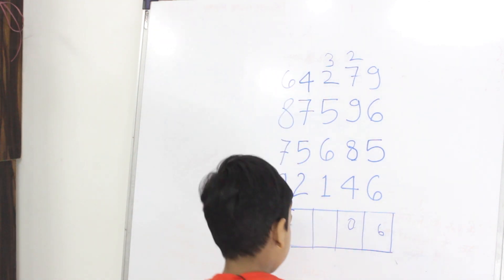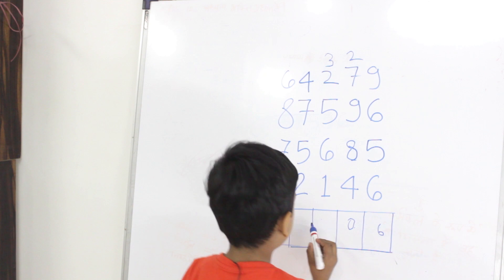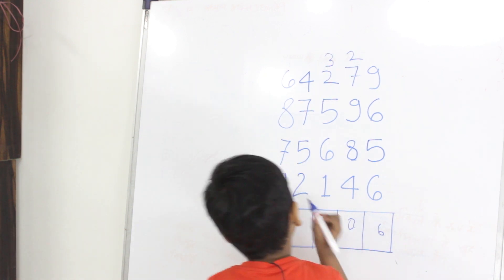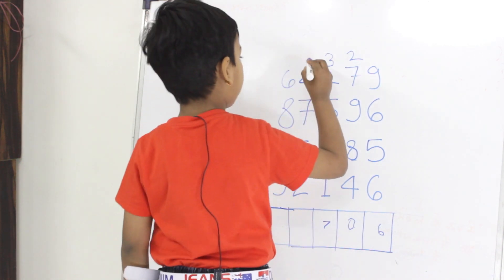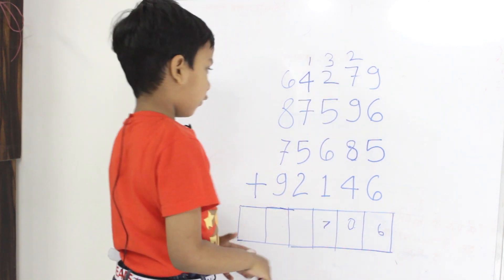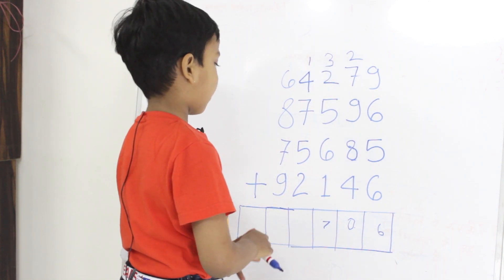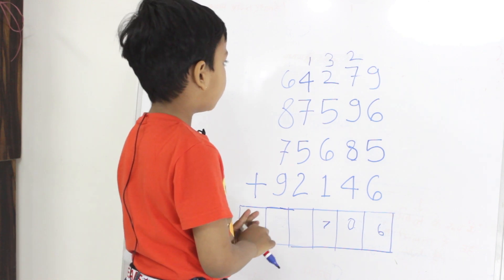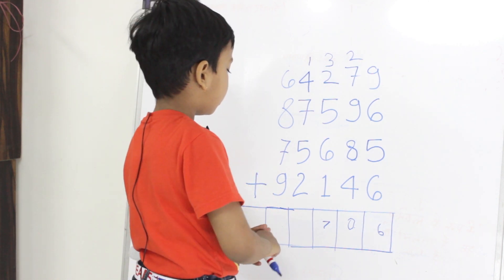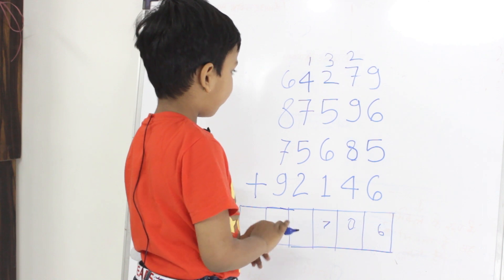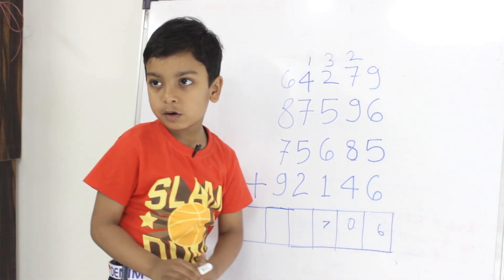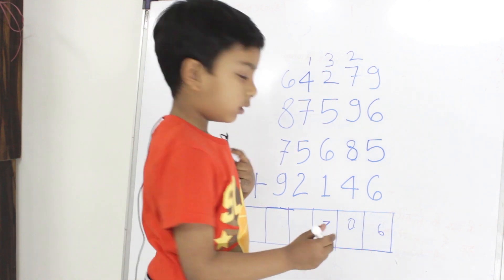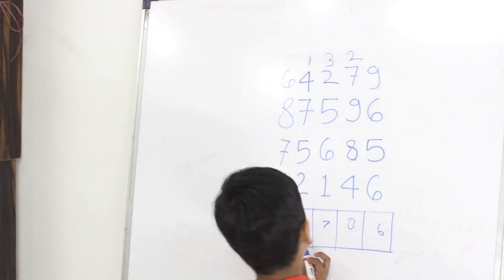10 plus 17. 7 plus 7: 1. Upar. 4 plus 1: 5. 5 plus 5: 10. 10 plus 2. 10 plus 17: 17, 18, 19.